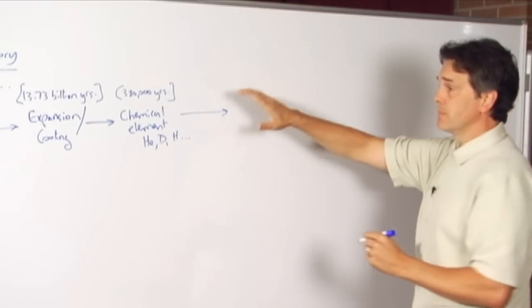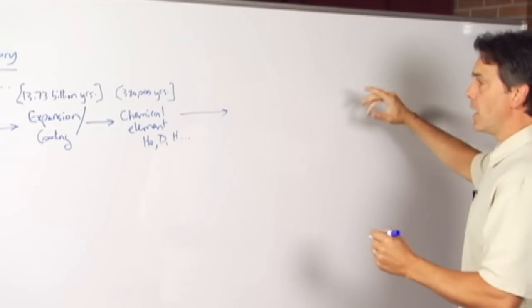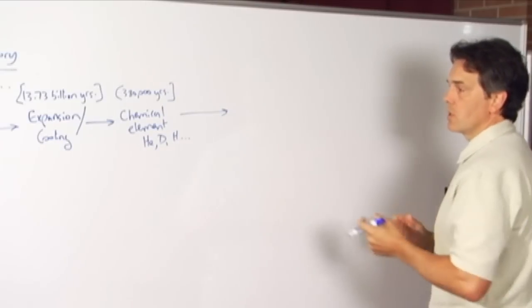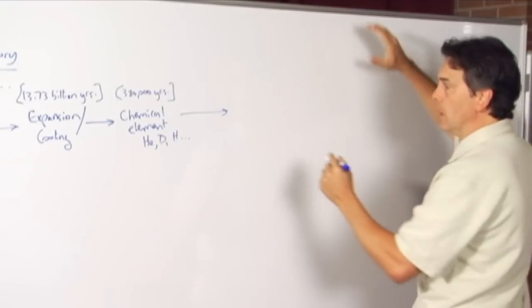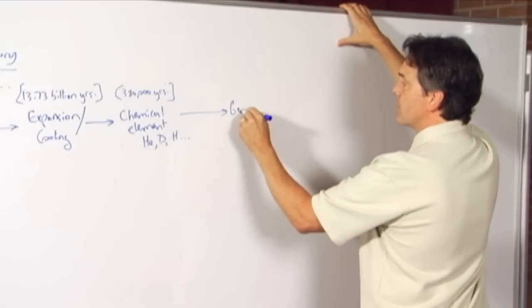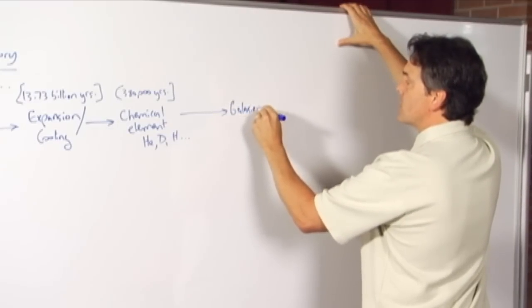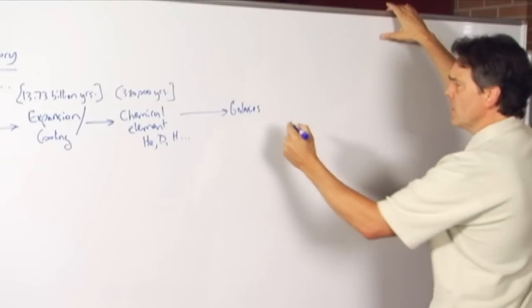Next major phase, again, over the course of long stretches of time, the chemical repertoire is elaborated and developed, and then those chemicals start to form into structures that we know as galaxies.